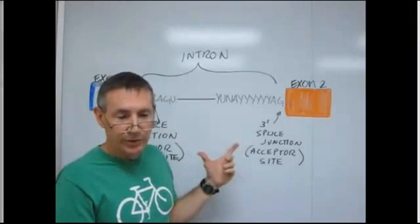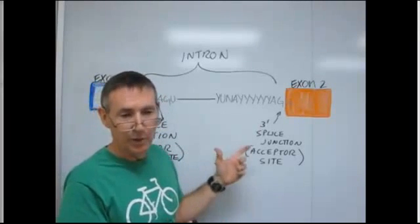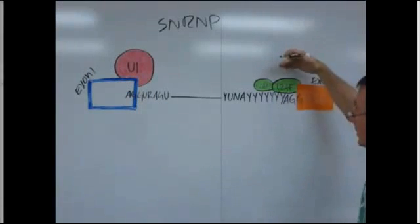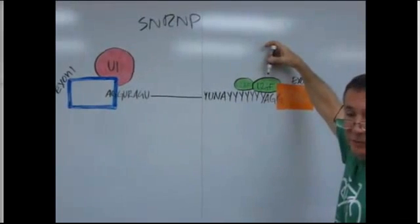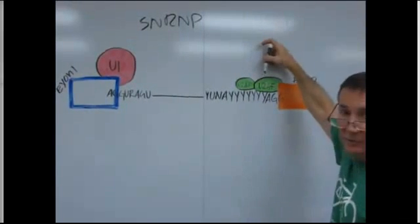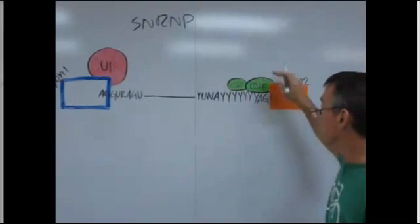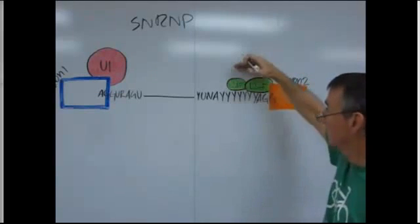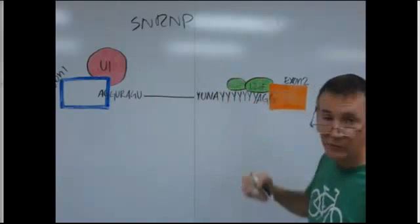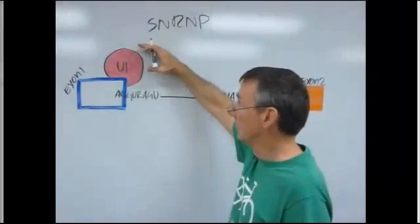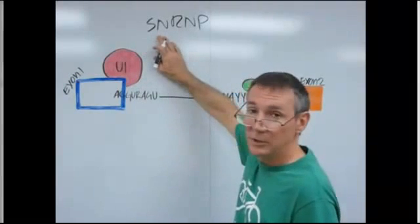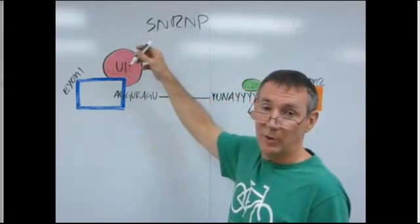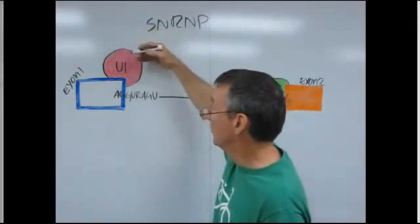The next thing we're going to look at is the assembly of the spliceosome, which is the complex that removes the intron. The first thing to bind to begin the process of splicing are the U2AFs — U2AFs are proteins, standing for U2 accessory factors. Two of these bind: one of them binds right at the acceptor site, the next one binds to the polypyrimidine tract, extending out toward the branch point, toward this A. At the other end, at the donor site, what binds is the U1 snRNP — a small nuclear ribonucleoprotein, a combination of a protein molecule and a small RNA. The U1 snRNP binds at the donor site.